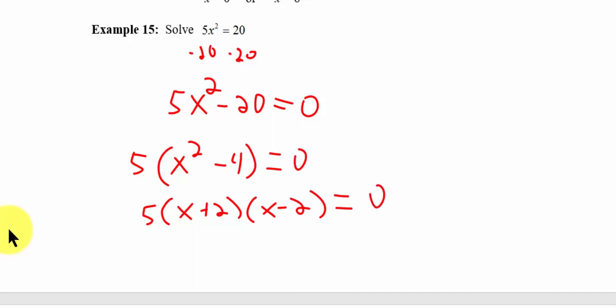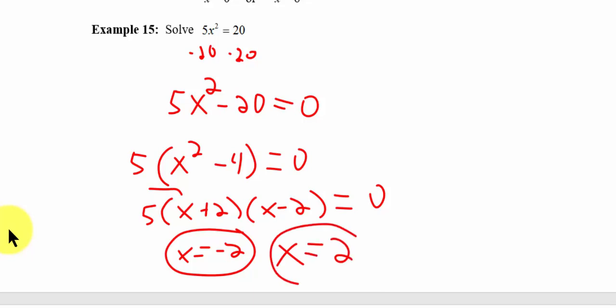This becomes 5 times x plus 2 times x minus 2 equals zero. So what is the solution? If x equals negative 2, that's one solution — putting negative 2 in for x gives zero. And x equals positive 2 is the other solution, since putting positive 2 in also results in zero. So my two answers are x equals negative 2 and x equals positive 2.